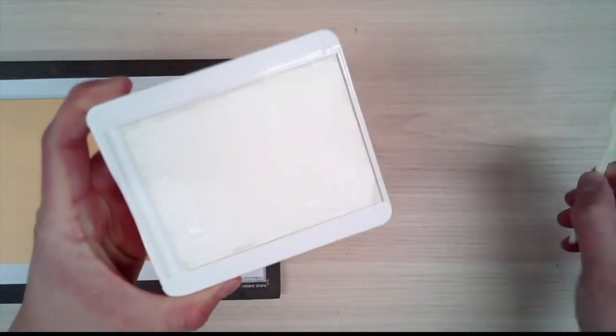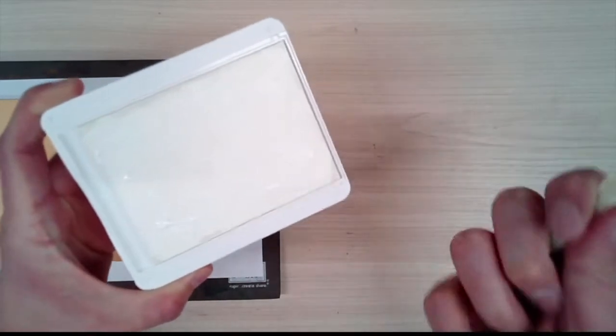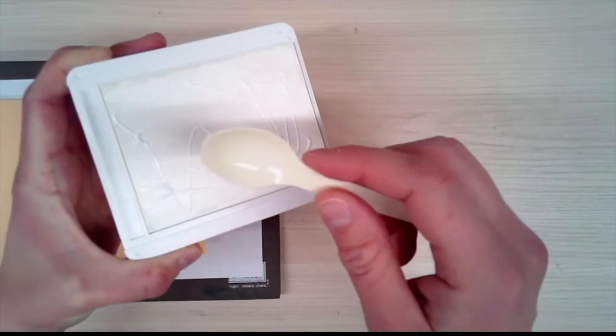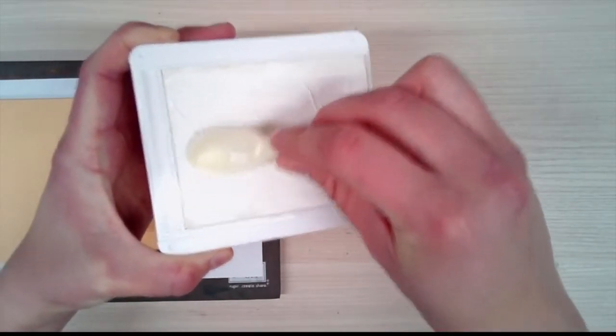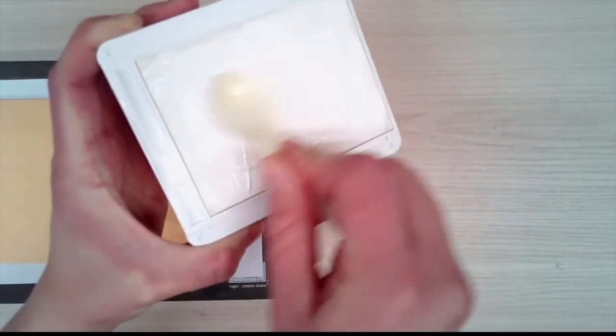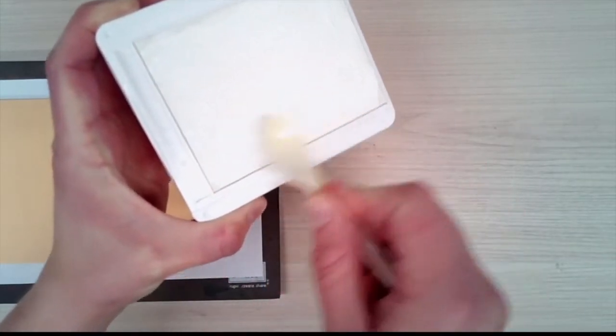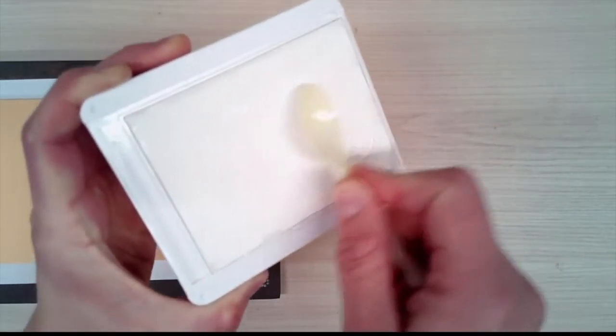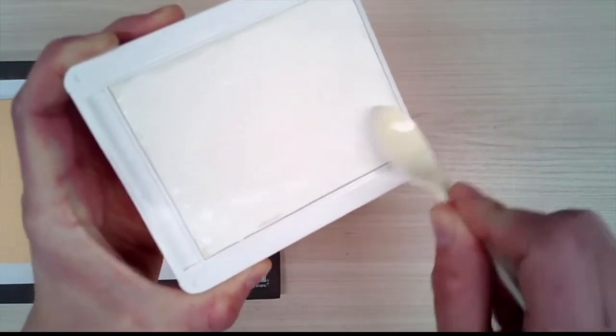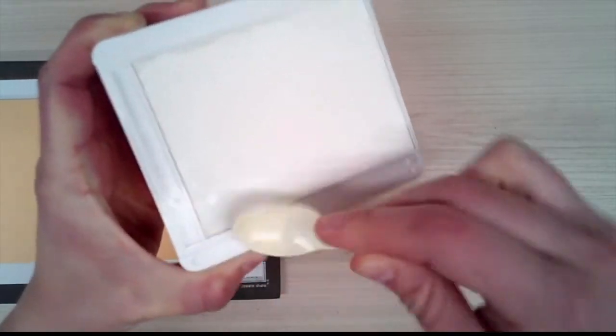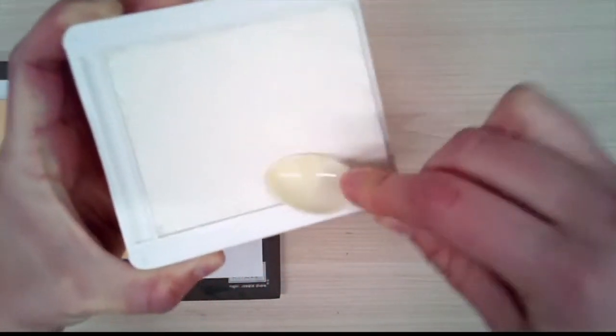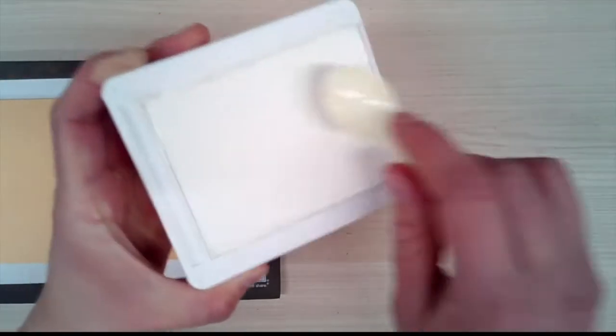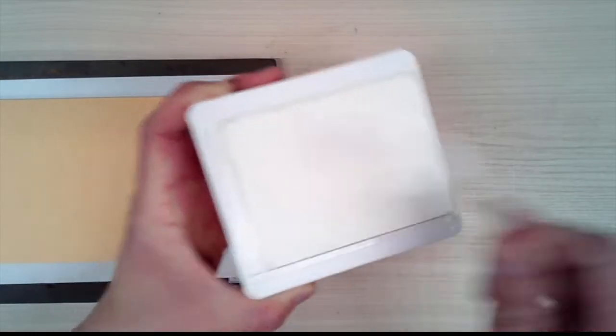What I like to do is I call it icing the ink pad. Take a spoon, maybe a disposable one or one you don't mind getting ink on, and literally you're going to ice it like you're icing a cake or cupcake, working it into the ink pad and all around the edges. Once you've done that, you can tell the whole ink pad has absorbed all the ink and we're good to go.